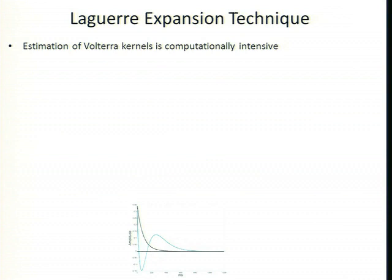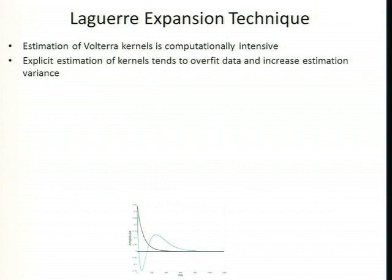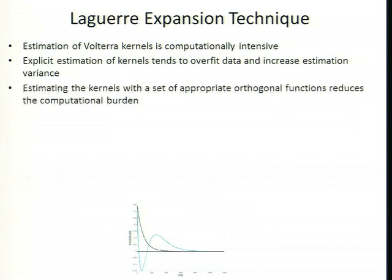Kernel estimation based on least squares, while straightforward, is quite computationally intensive — we're now estimating not just the linear part but also the nonlinearities, which add many parameters. Explicit estimation either through least squares or cross-correlation leaves us with big problems: we either need a lot of data from a sufficiently stationary system, or we end up overfitting because we're using too many parameters for a dataset that isn't large enough, leading to increased estimation variance.